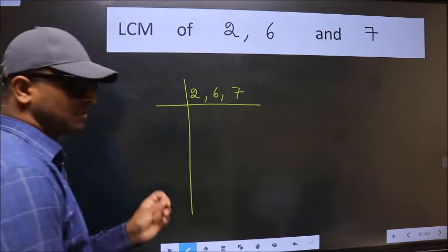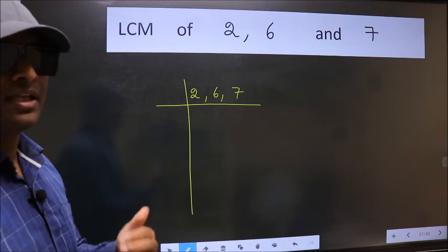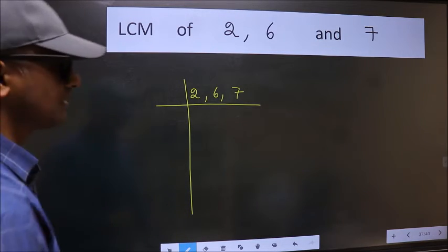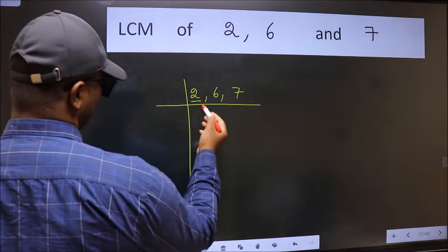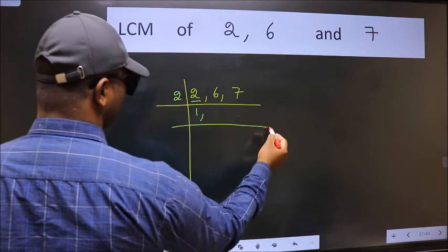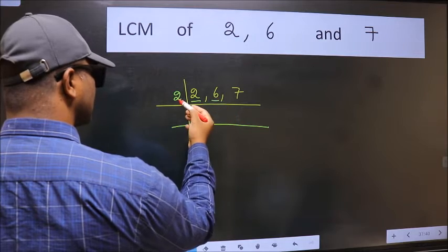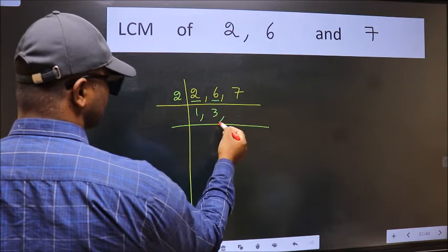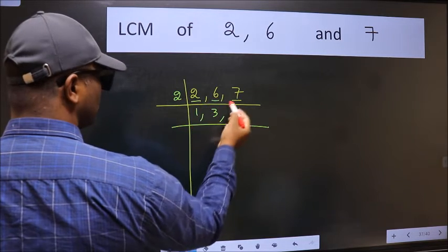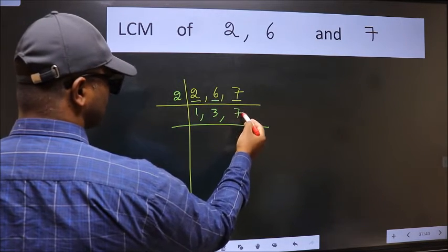This is your step 1. Now we should focus on the first number which is 2 here. 2 is a prime number so 2 wants 2. The other number 6, when do we get 6 in 2 table? 2 times 3 is 6. The other number 7, not divisible by 2 so we write it down as it is.